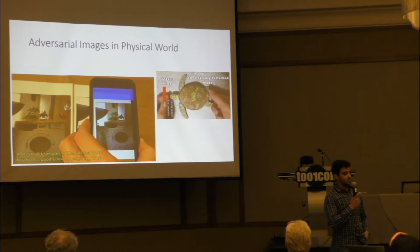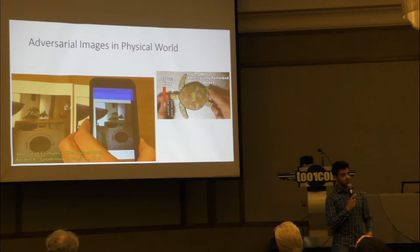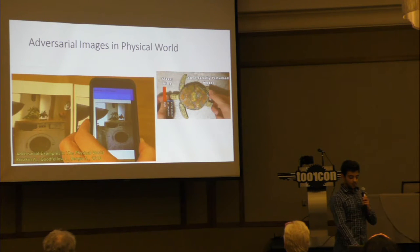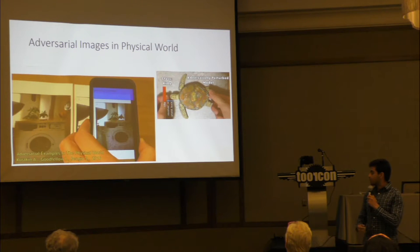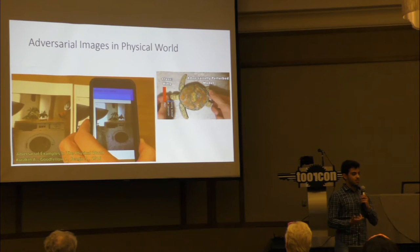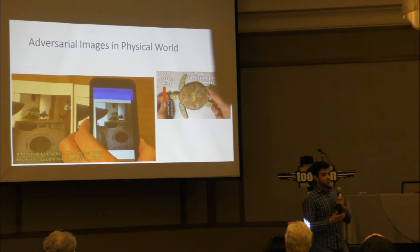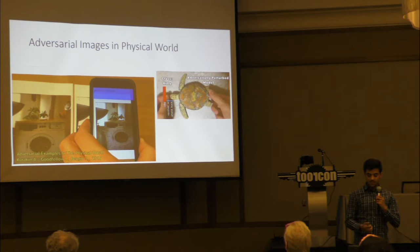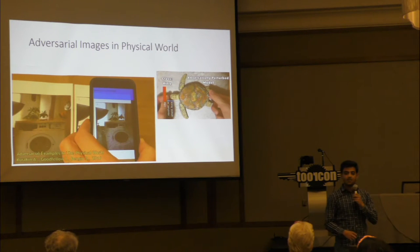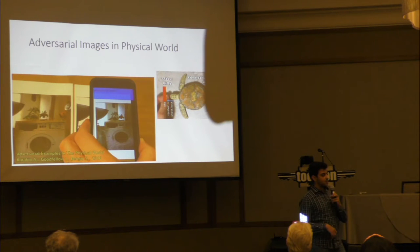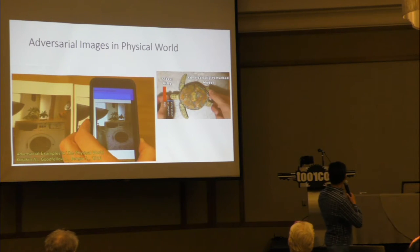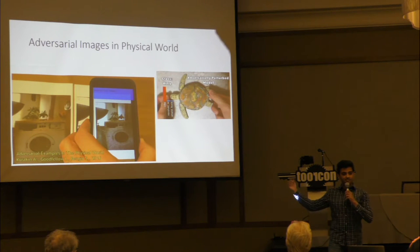A couple of researchers from Google showed that when you take these perturbed adversarial images and print them out on a sheet of paper, then feed them as an image digitally, it still gets misclassified. They actually printed out the noisy image and it got misclassified by the algorithm. They also tried this with a 3D turtle — they 3D printed a turtle with these noisy images and it got misclassified as a rifle. The noise is embedded in the texture of the turtle itself.